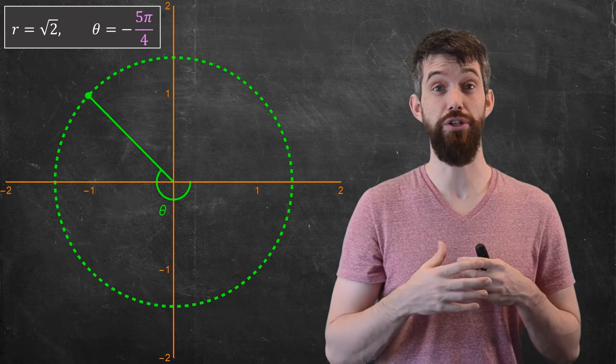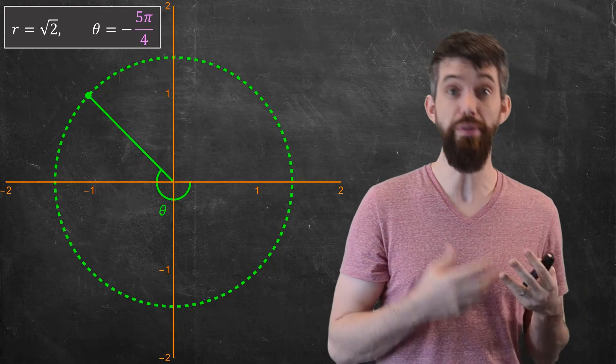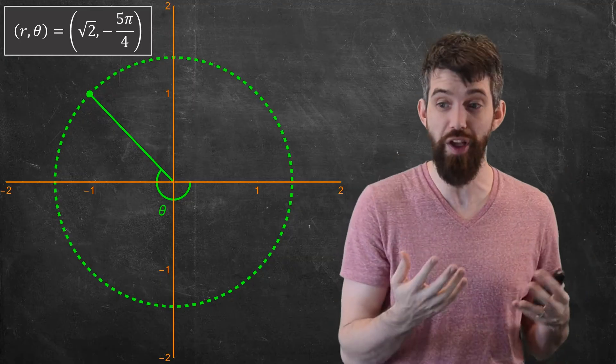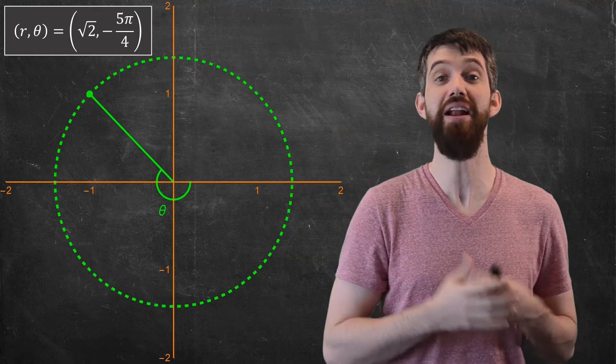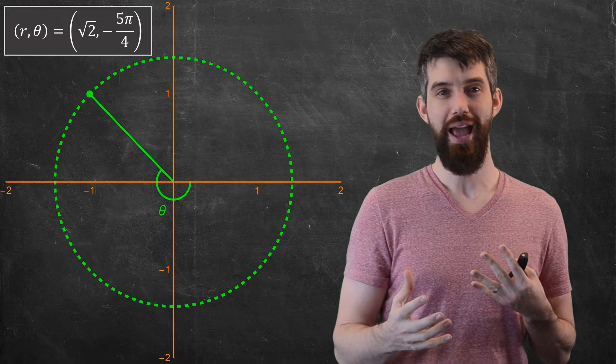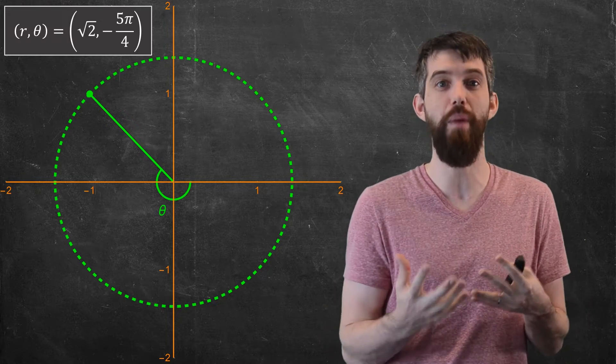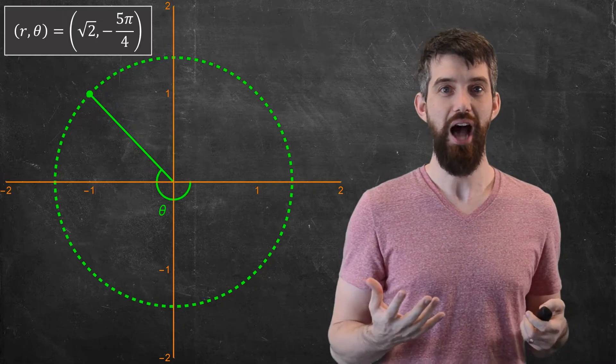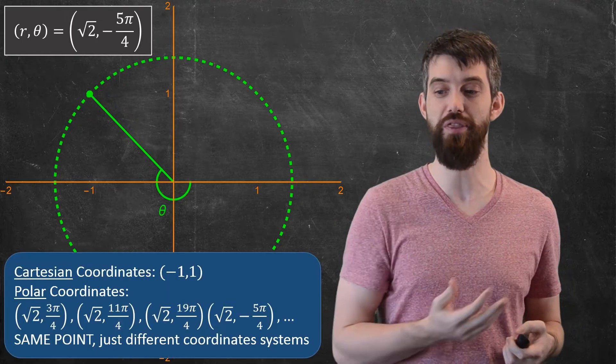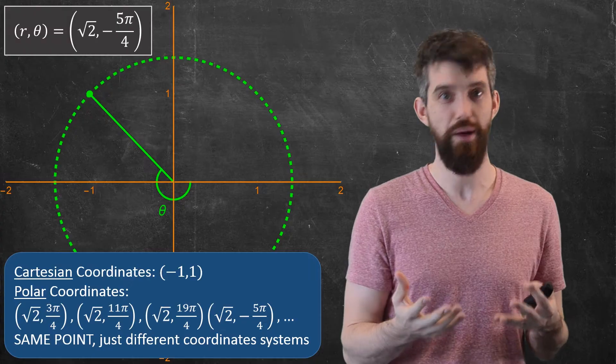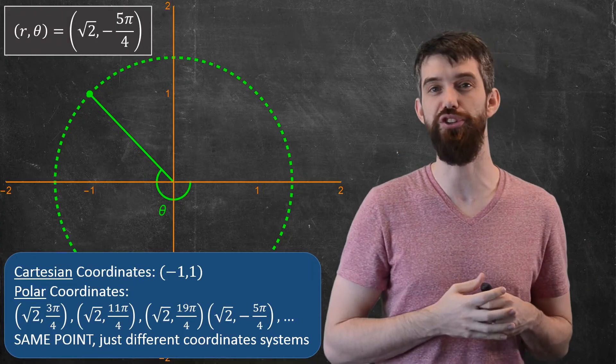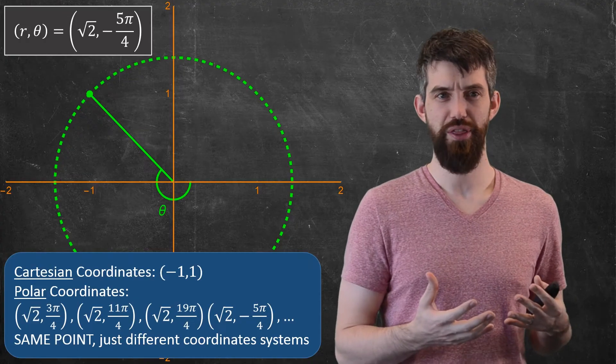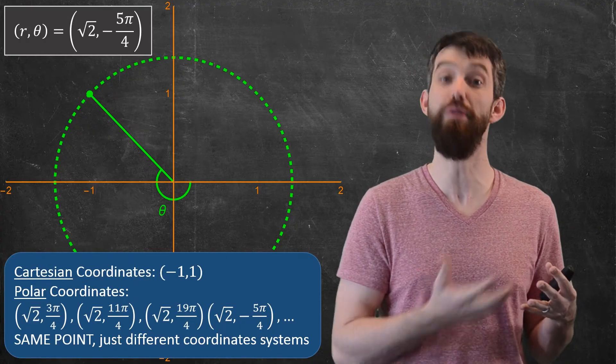What we typically do is to take these two numbers, the r and the theta, and put it together into a coordinate like this. We say that (r, θ) is equal to this √2, and in this example, -5π/4, and those pair of numbers are my polar coordinates. So the big moral lesson here is that I've got these two different coordinate systems. I've got this Cartesian coordinates, (-1, 1) is where this point lives in Cartesian, and then I also have all of these different polar coordinates. Their radius is √2, but their thetas might be different.